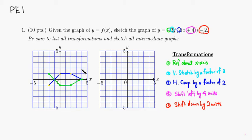For the second transformation, we do a vertical stretch by a factor of three. The y-value was originally one, so it becomes three. This point had a y-value of negative one, so it triples to negative three. This point originally had y-value zero — multiplied by three it's still zero, so it stays there. Connecting these dots, the graph looks like this.